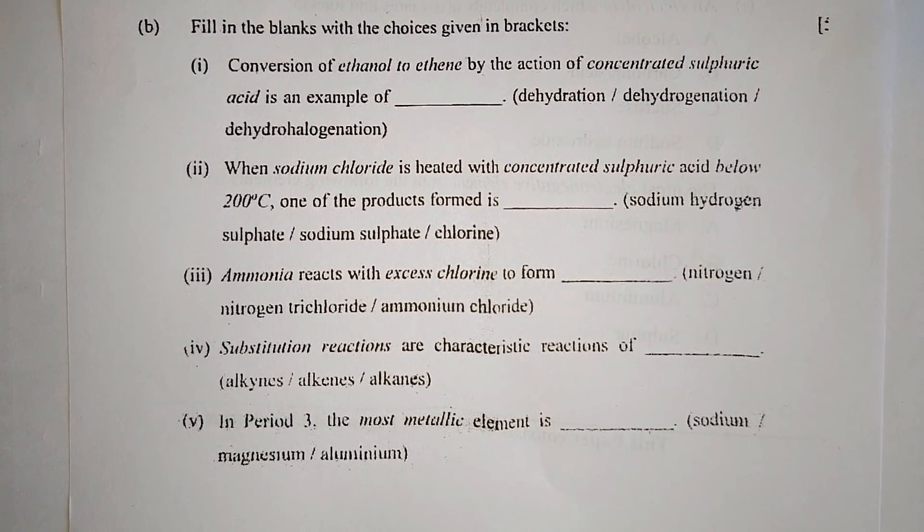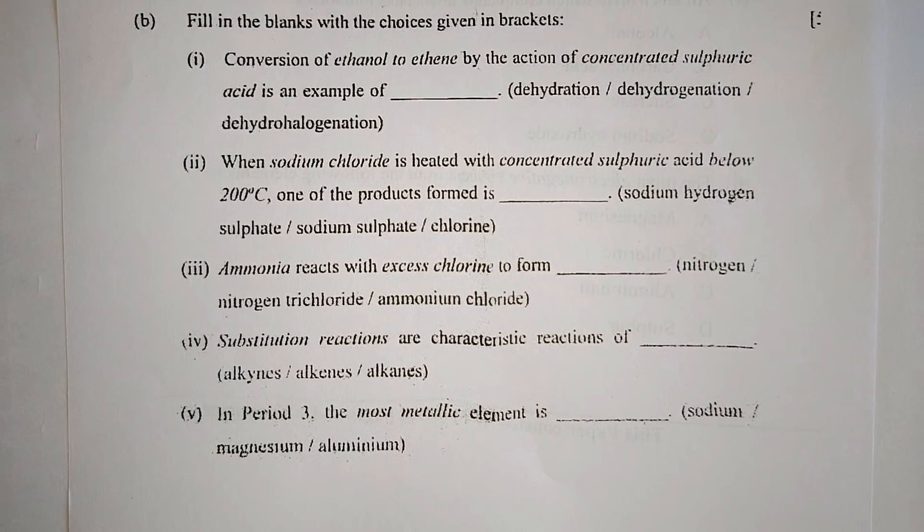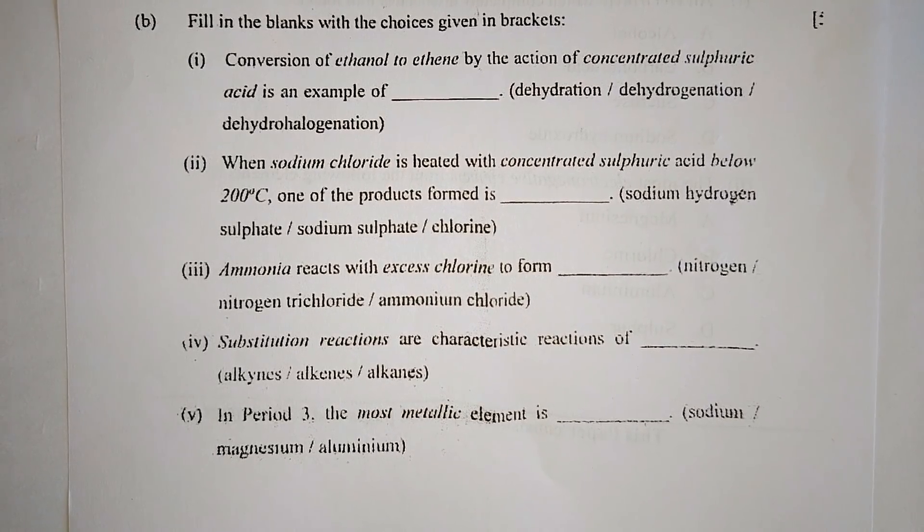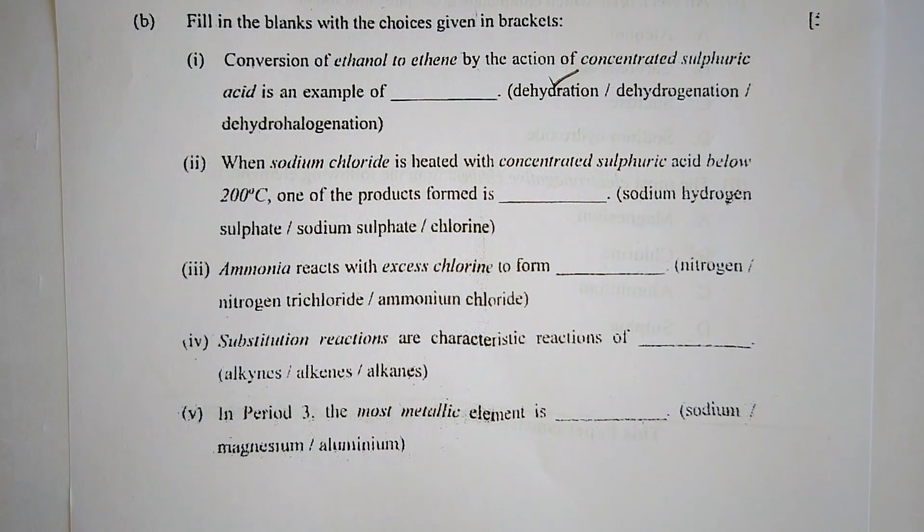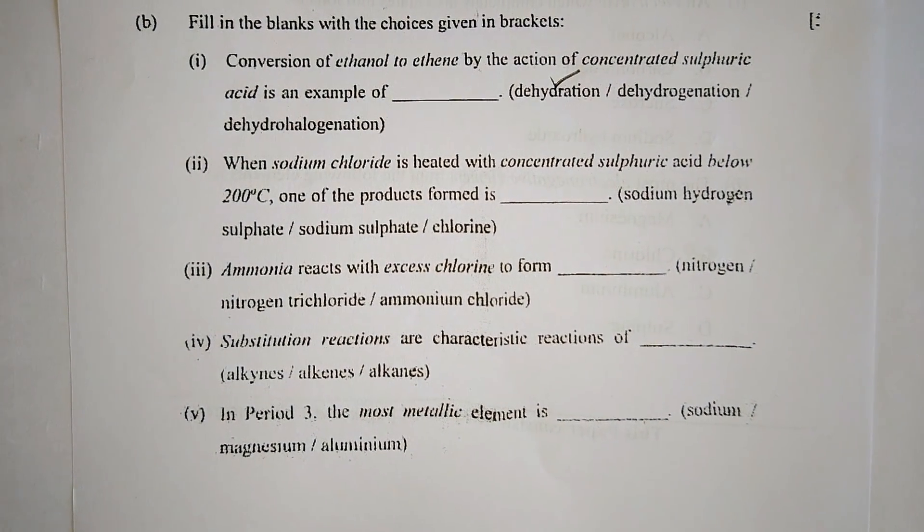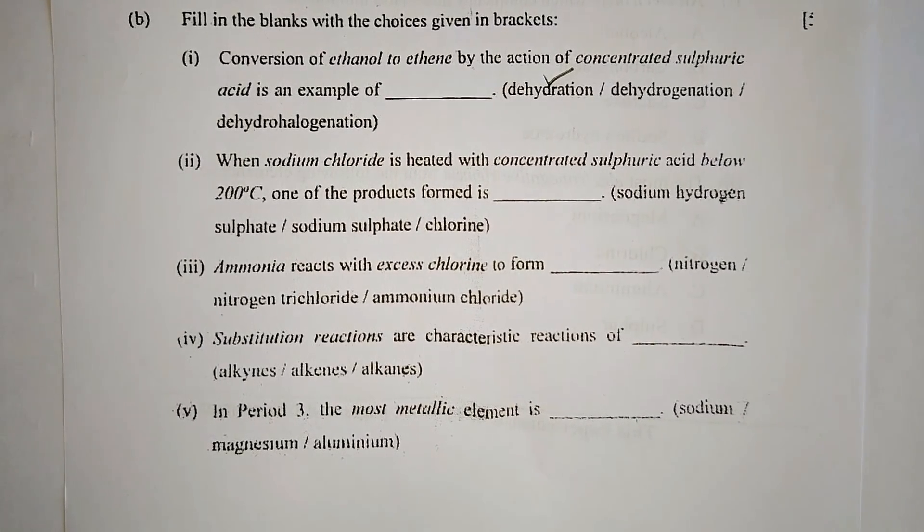Part B: Fill in the blanks with the choices given in brackets. Number one: Conversion of ethanol to ethane by the action of concentrated sulfuric acid is an example of dehydration, dehydrogenation, or dehydrohalogenation. The correct answer is dehydration, as concentrated sulfuric acid removes elements of water from ethanol to form ethene.